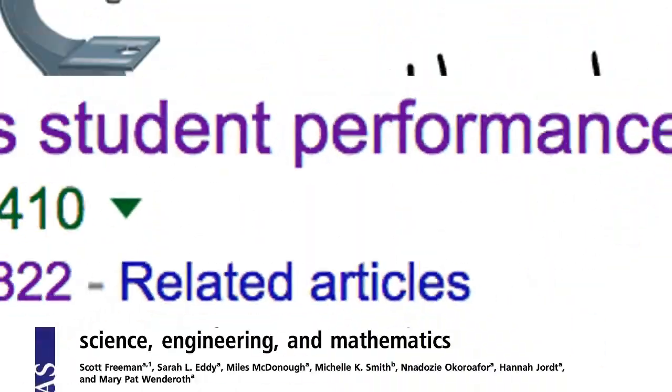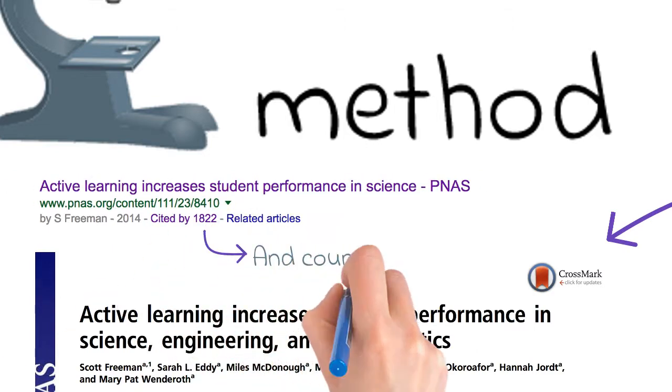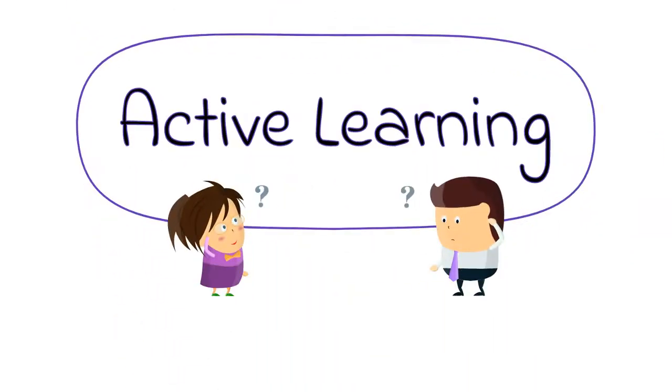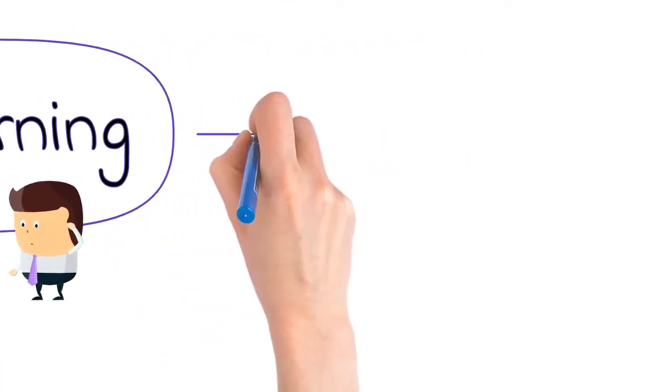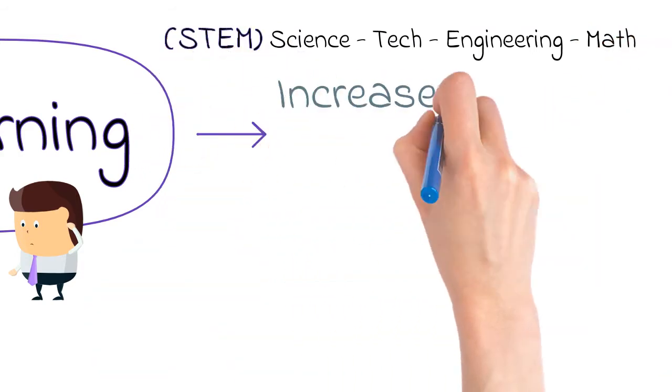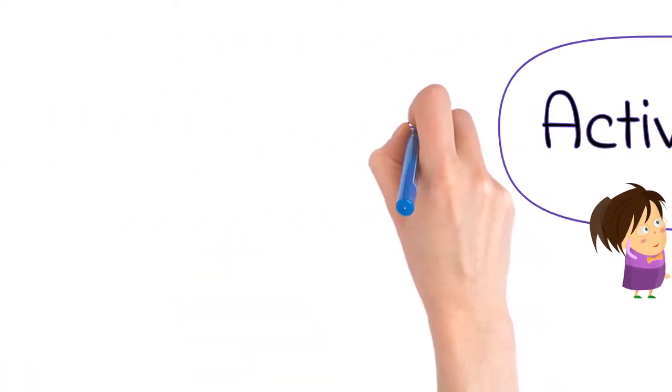As of this recording, it has been cited by researchers an astounding 1,776 times. The study is all about figuring out if active learning in university science, technology, engineering, and math courses is really associated with increased student performance. So how do you test that?